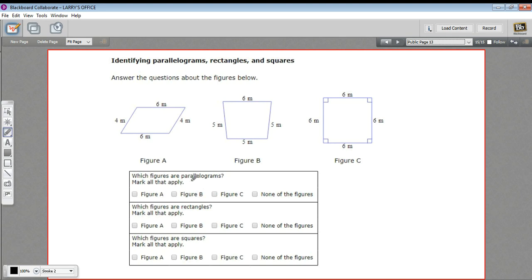Which figures are parallelograms? Well, I think figure A is for sure. Figure B is a trapezoid. That doesn't fit under parallelograms. But figure C, a square is a type of parallelogram. So you'd answer C as well.